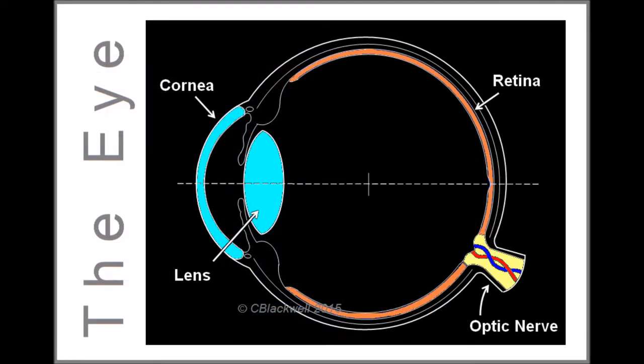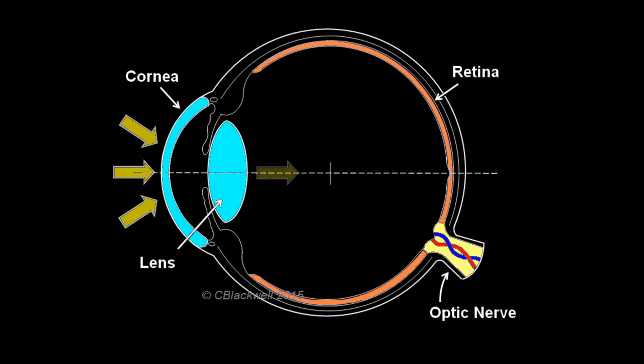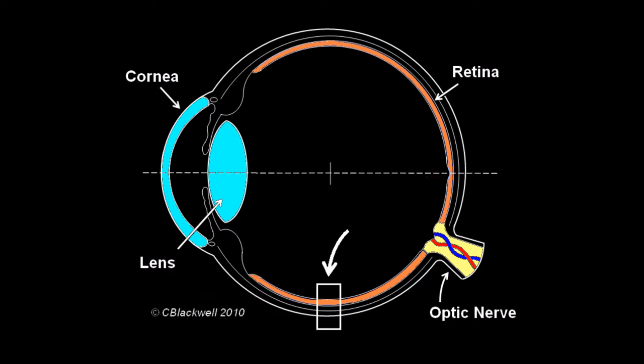We have looked at the structure of the eye in detail in other videos. In general, when light enters the eye, it is focused by the cornea and lens to form an image on the retina. Individual photons are absorbed by photoreceptor cells, which change the level of their electrical activity, thereby signaling arrival of photons.